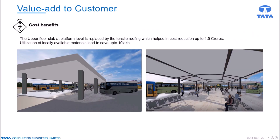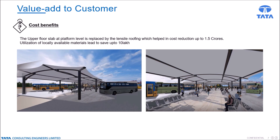Considering the commercial aspect, the upper floor slab at platform level is replaced by tensile roofing, which helped achieve a cost reduction of up to 1.5 crores. The team also used locally available materials, saving up to 10 lakhs.